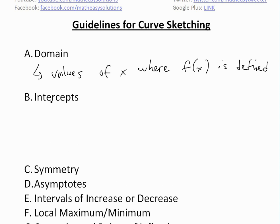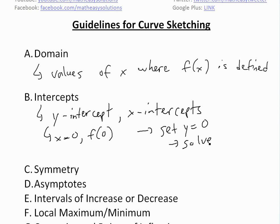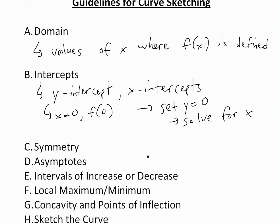Part B of the guidelines is intercepts. There are two intercepts: the y-intercept and the x-intercepts. The y-intercept is basically when x is equal to 0, or this is just f of 0. For the x-intercept, you set y equal to 0 and solve for x. If the calculation looks pretty hard, you could just skip this step if the equation is too complex.